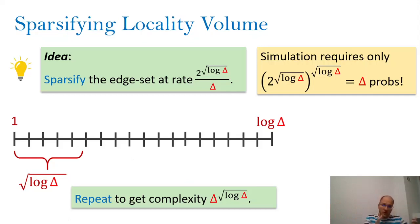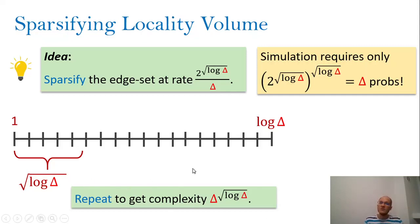If you look at the total complexity after doing this reduced sparsification — computing one chunk of sqrt(log Δ) iterations, then sparsifying again more aggressively for the next chunk, and so on — the total complexity is only Δ^(sqrt(log Δ)). This is again a significant improvement compared to simulating the peeling approach directly in LCA without sparsification. There are ways to get even faster: one can show how to achieve Δ^(log log Δ) complexity for constructing approximate maximum matchings.